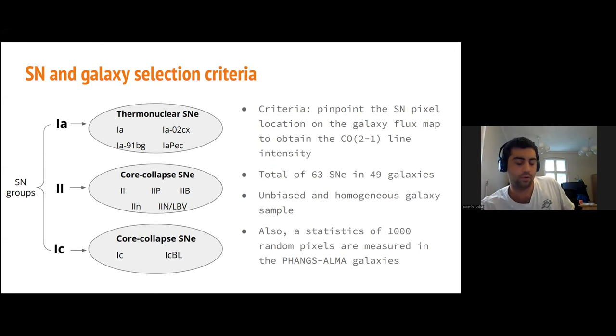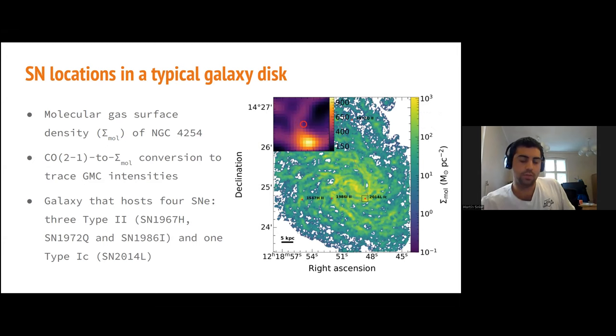In this map, it's possible to see a typical galaxy. The color bar shows the surface density of molecular hydrogen gas, Sigma_mol, which is a simple conversion of the observed CO line. This surface density traces the molecular cloud intensity. It's possible to see that there is in fact a high correlation between the supernova environment and Sigma_mol, because the supernova location is associated with a molecular cloud with very high intensity at approximately 1000.